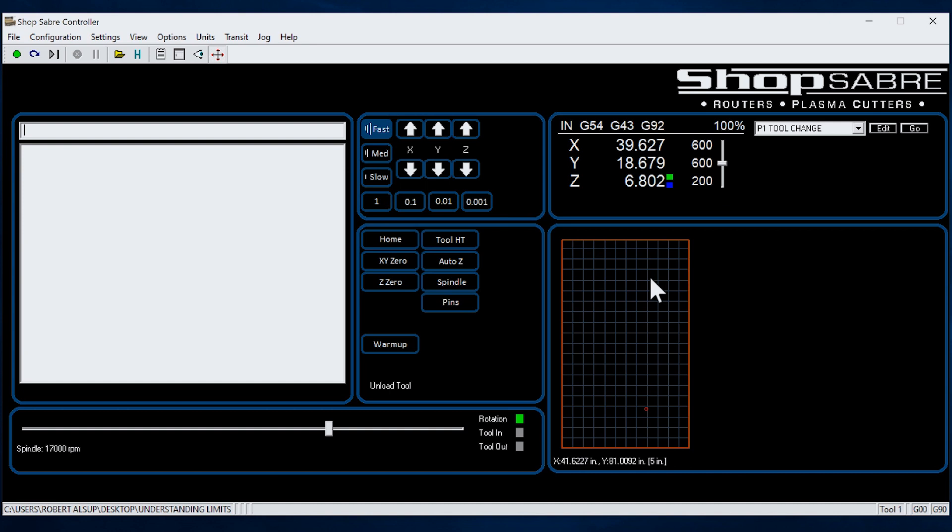What you see down here actually reflects the machine table or the work envelope. And when you see this red dot here, that's the current location of the spindle. So as I jog the machine around, you'll see that move. That's what's happening actually on the machine itself. And also if you watch up above there, you'll see the dimensions up here change. So you always have live dimensions up here.